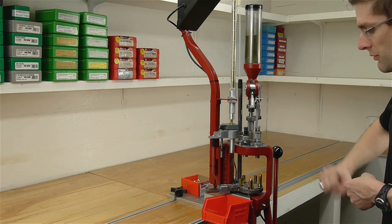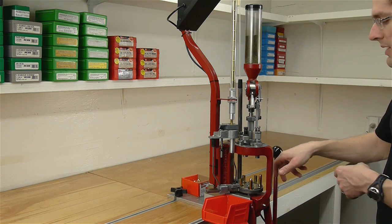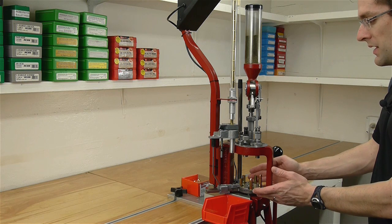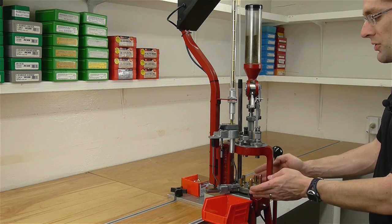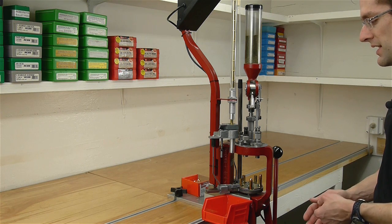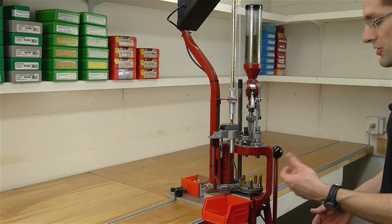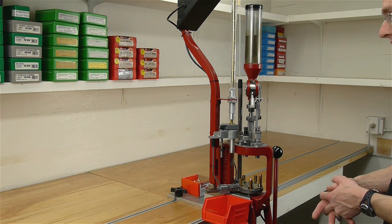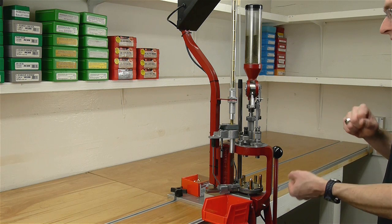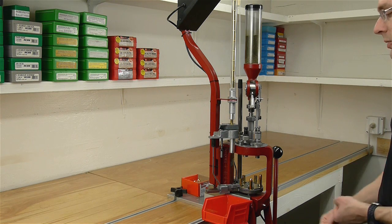Auto-indexing means that when we pull the handle it's going to automatically advance what's called the shell plate. Progressive presses have shell plates with multiple stations, five in this case, as opposed to single stage presses and turret presses that have shell holders because they only act on a single stage of the process at a particular point in time.